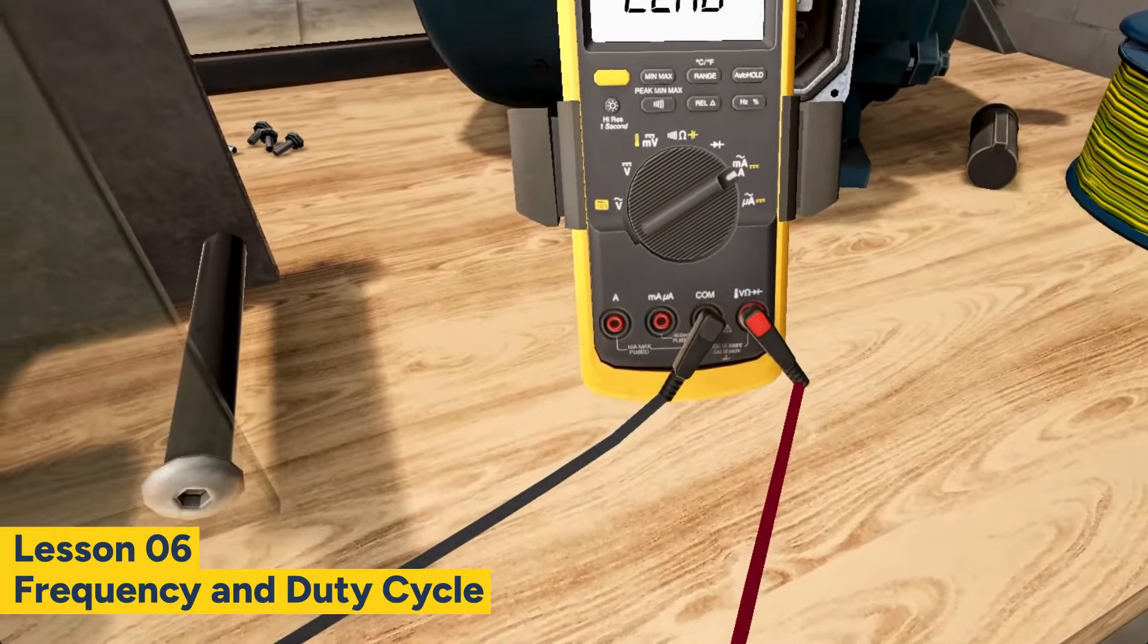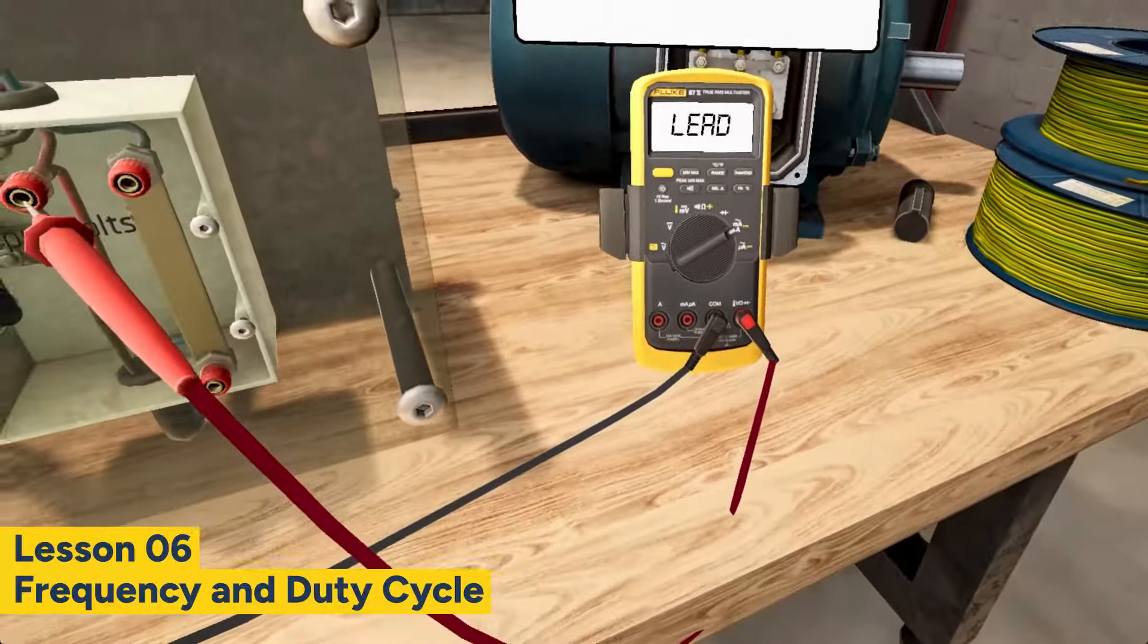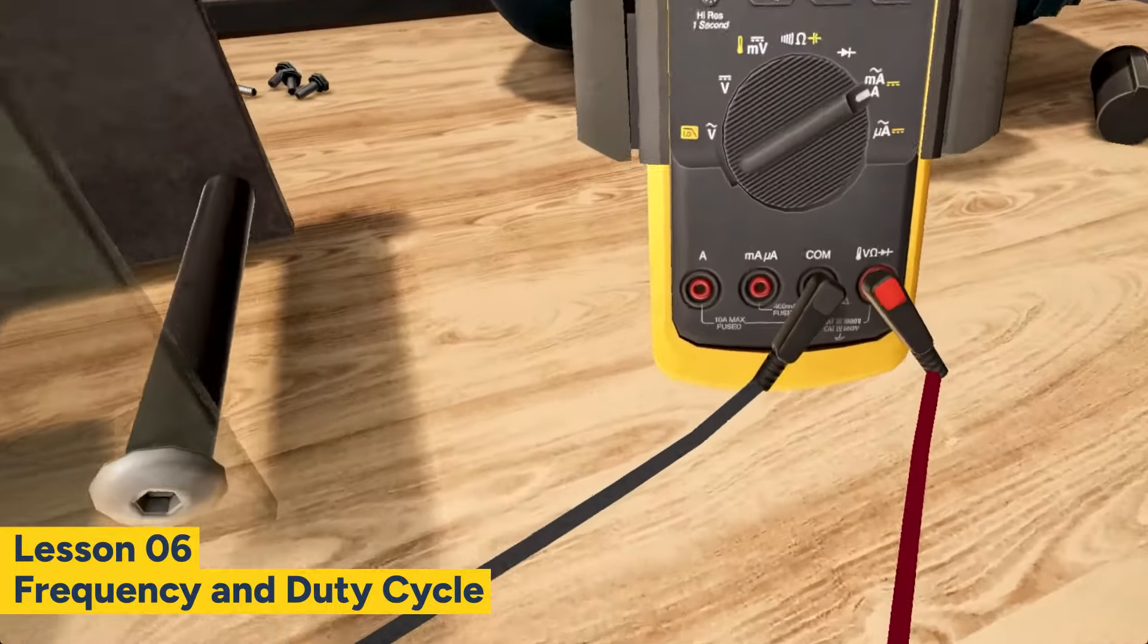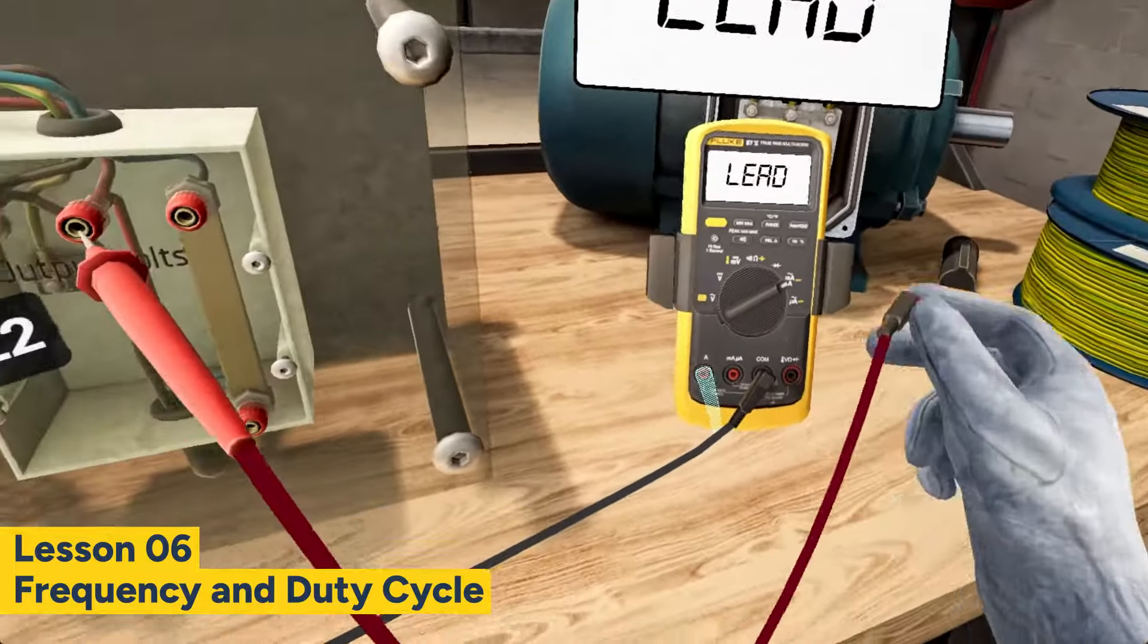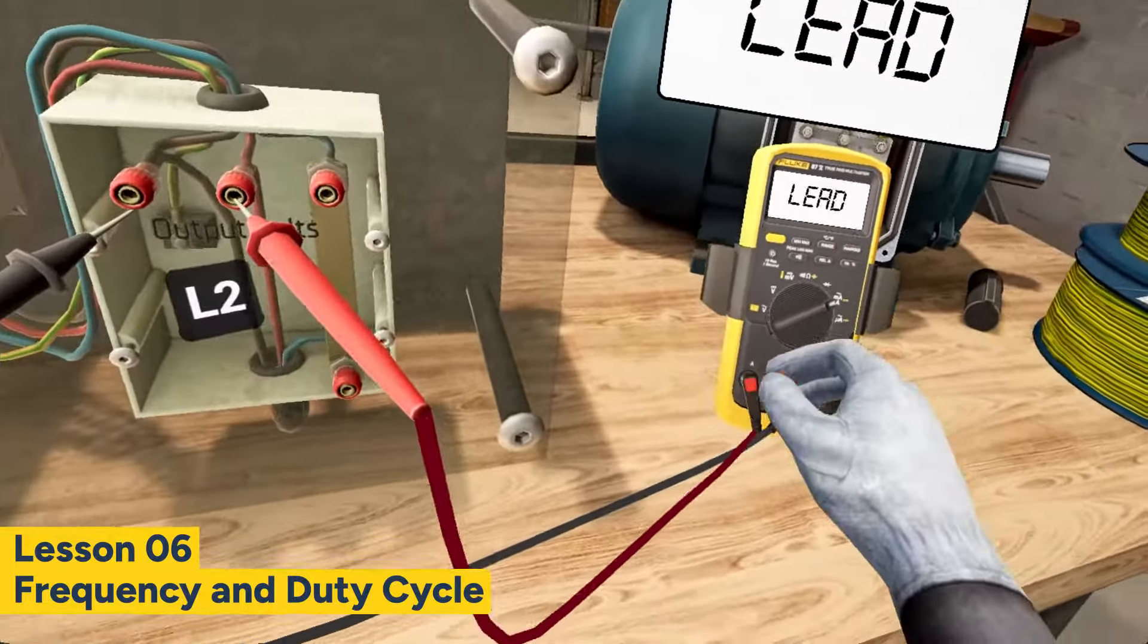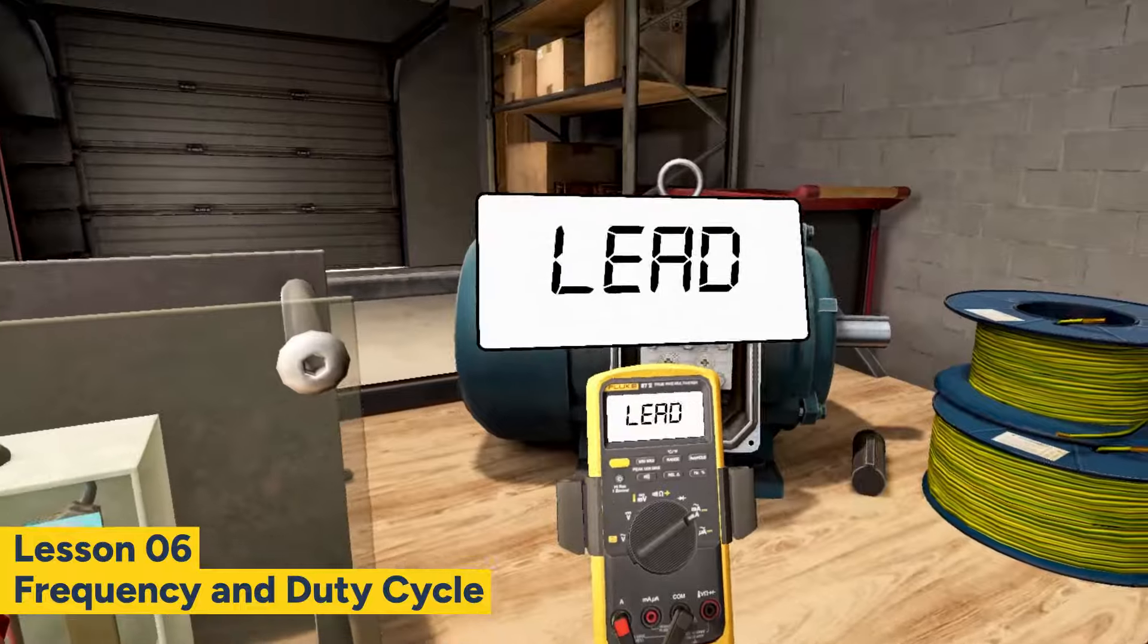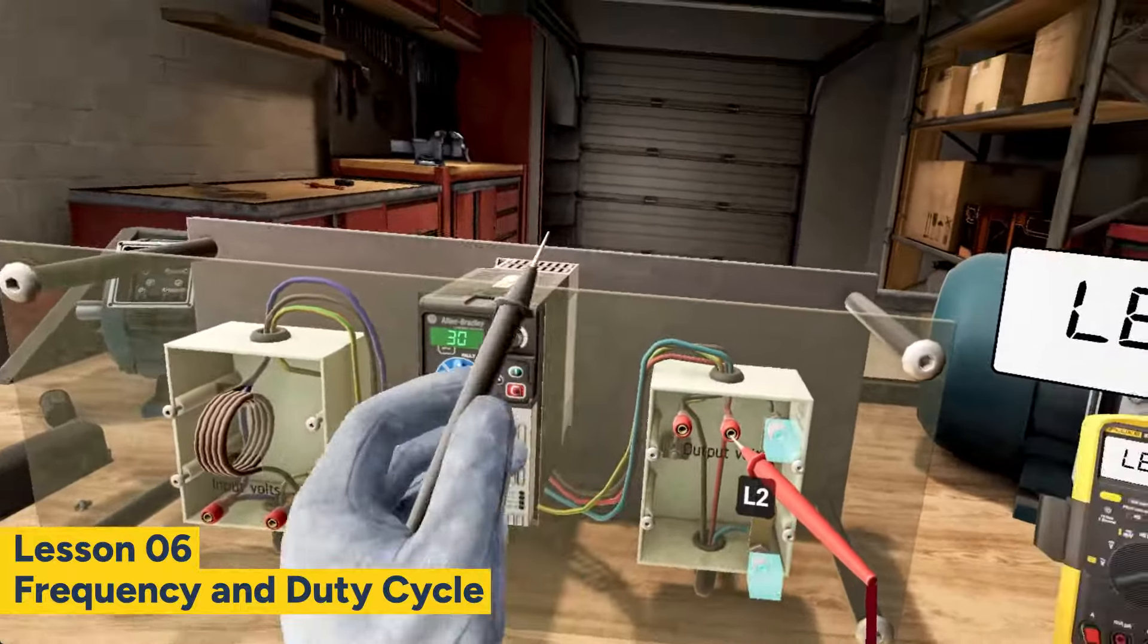So when measuring unknown current, be sure to use the input jack with the higher range value first to protect the multimeter and yourself from accidents. Now take the probes and connect them to the test points at the input box.